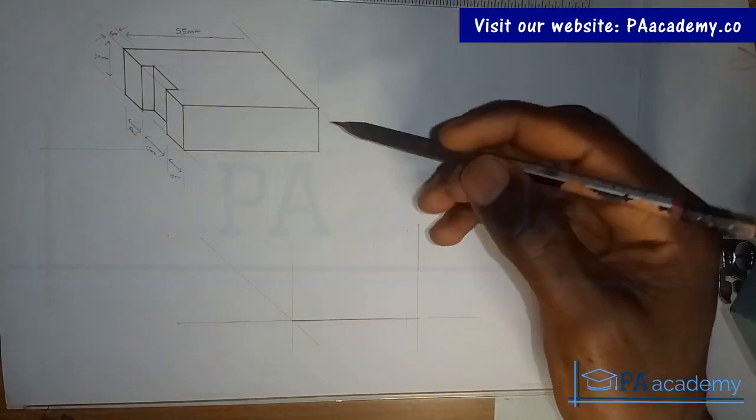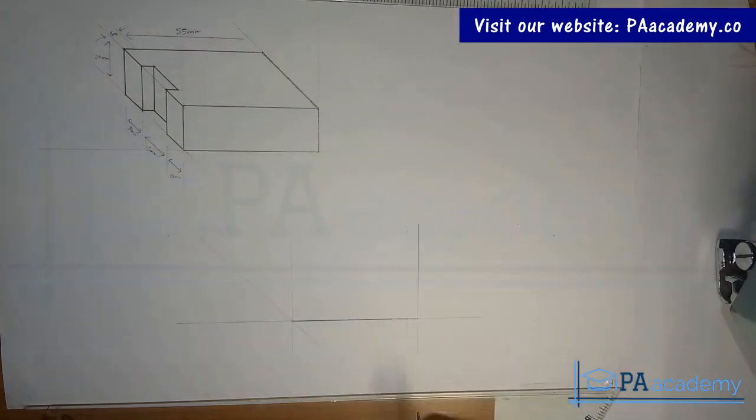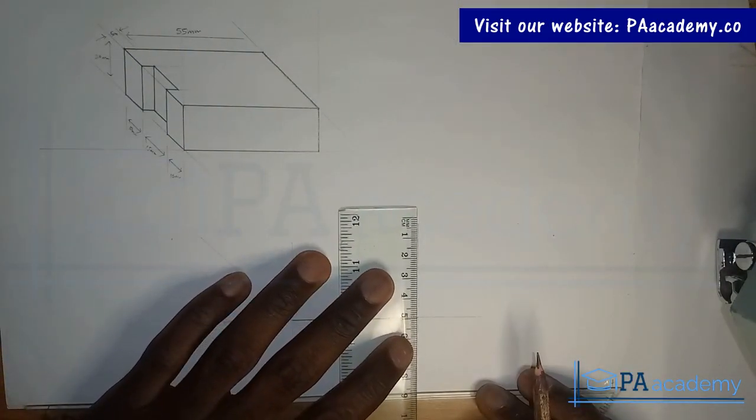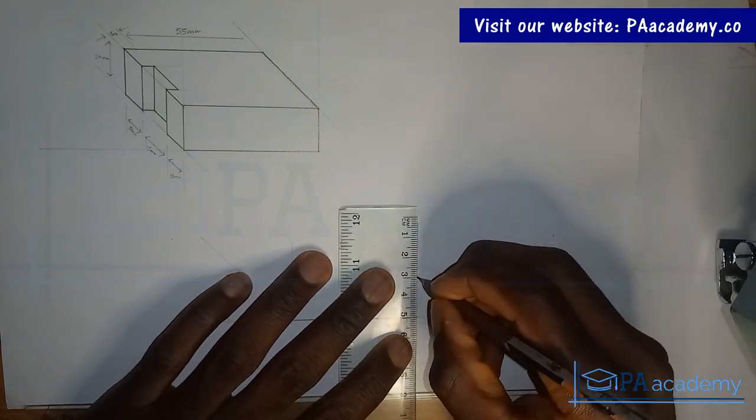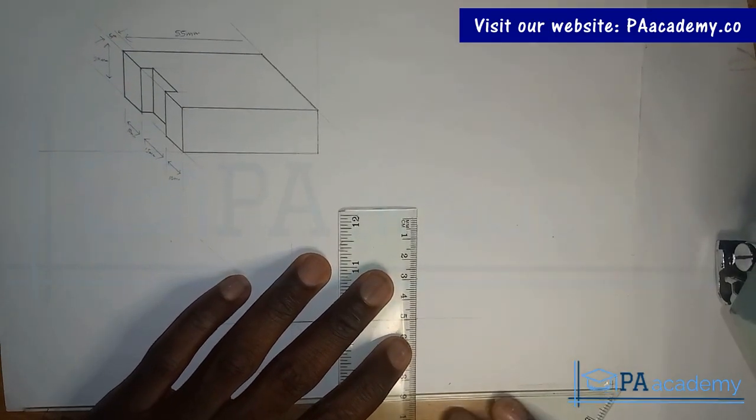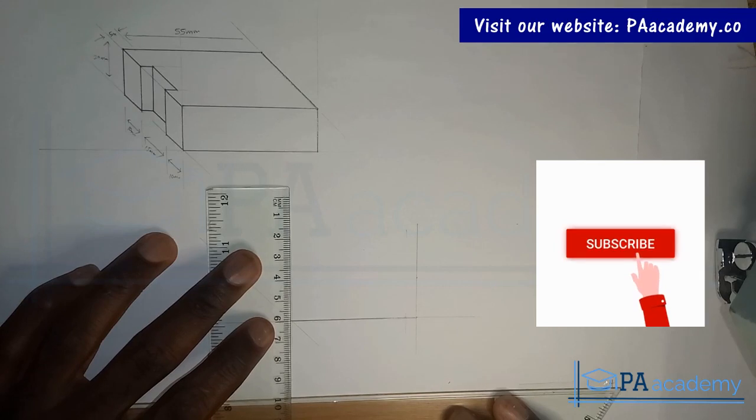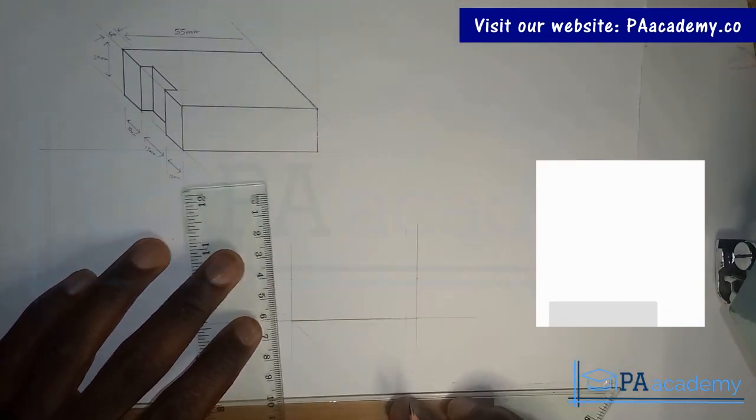So we are back on track. Next we want to measure the height of this is 20, from here to here, 20 mm which is 2 cm. This is 2 cm here. And on this part, here we have our 2 cm. Also, on this line.